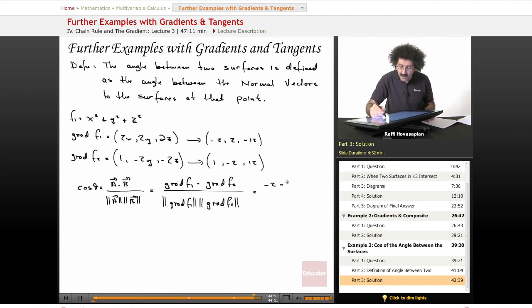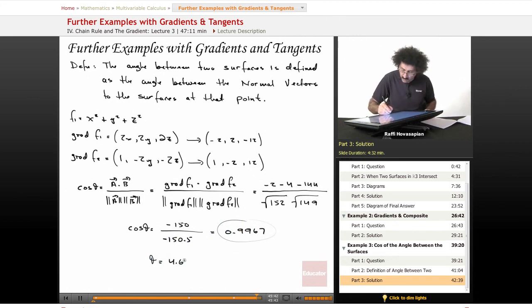So the gradient of f₁ dotted with the gradient of f₂ is just this dotted with that. We get -2 times 1 equals -2. 2 times -2 is -4. 12 times -12 is -144. And then the norm of this thing, if you do it, it's going to equal 4 plus 4 plus 144, so it's radical 152. And here we're going to have 1 plus 4 plus 144, this is radical 149. So we end up with cosine of theta equals -150 over, and when I actually do that, it's -150.5 equals 0.9967, which is what we wanted. And if you want theta itself, it's going to be 4.67 degrees.